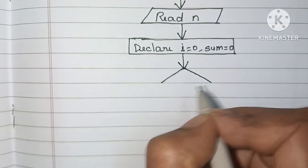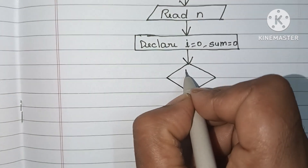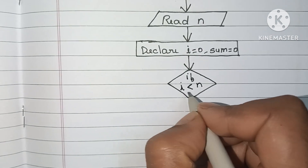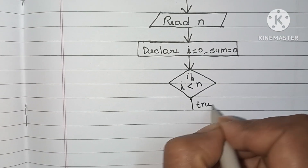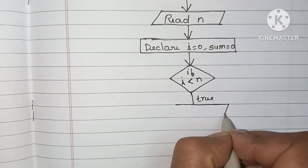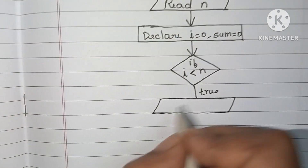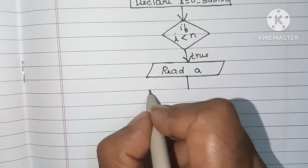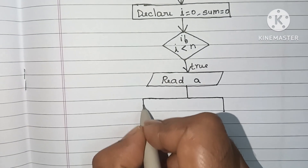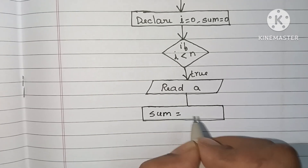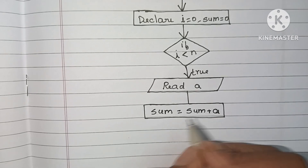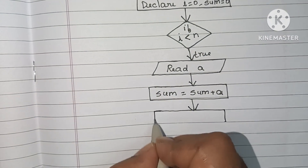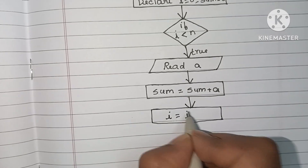Next, we compare i with n; comparison is done within a diamond shape. Within the diamond we write: if i < n. If this condition is true, we read the value of a — input values are written within a parallelogram shape. Then we find sum = sum + a, and increase i: i = i + 1. These process/operation steps are written within rectangular shapes.